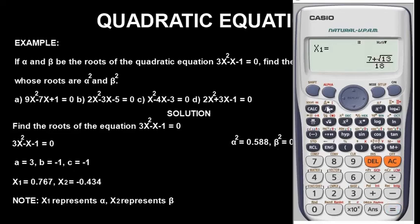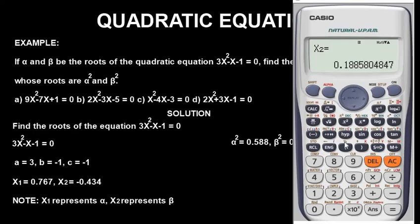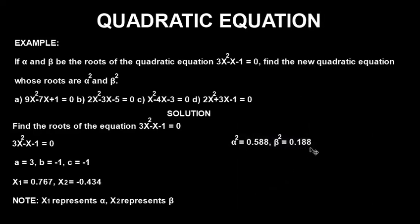Let's press equals to get x1 and x2 to check if they match our expected values. x1 comes up as a fraction — press SD — and we get 0.589, which matches our alpha squared value of 0.588. Press equals again for x2, press SD, and we get 0.188, which also matches. So option A is correct — no need to check options B, C, or D, since option A gives us the same values as the roots.